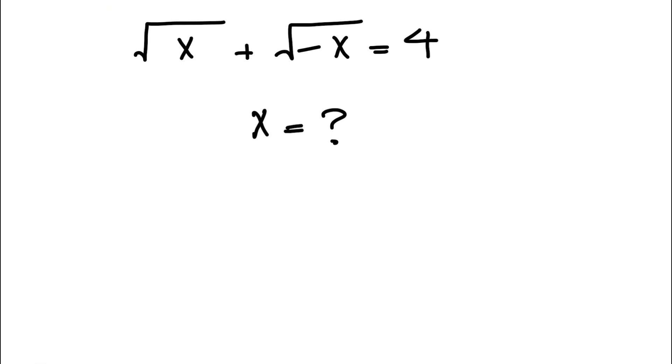So the main strategy we have in these kinds of questions is to square each side of the equation in order to get rid of the square root. On the left side, we basically have a plus b.